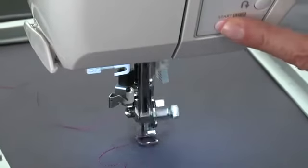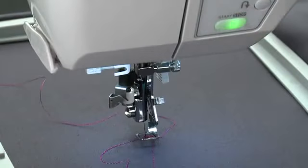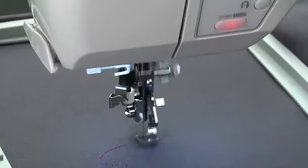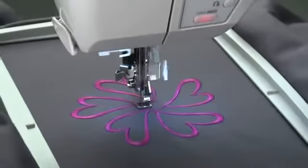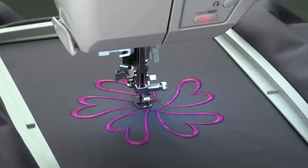To pause and trim the thread tail, press the start-stop button, trim the thread, then press the start-stop button again to resume sewing. The machine will stop automatically when the first color is completed.